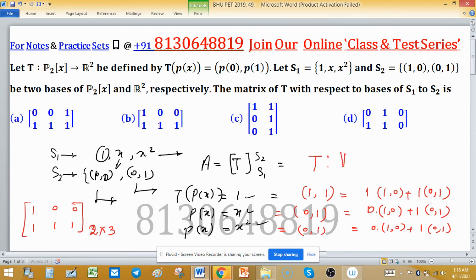Always, if T is a linear transformation from a vector space V to W, then the dimension of W becomes the rows and the dimension of V becomes the columns. So this is the fundamental concept to find matrix representation with respect to a basis.